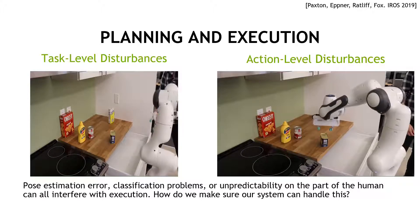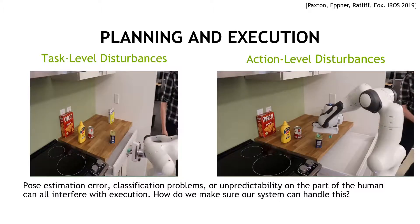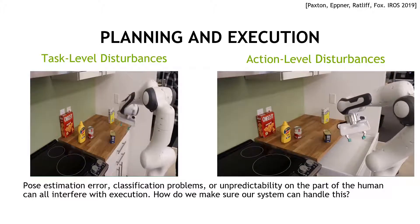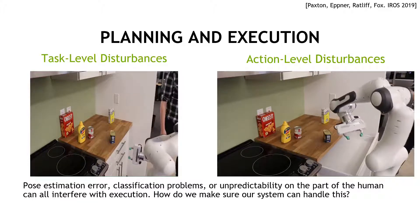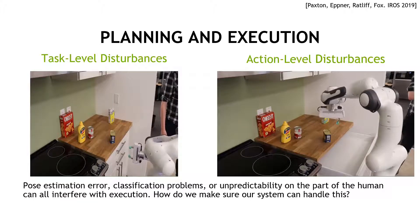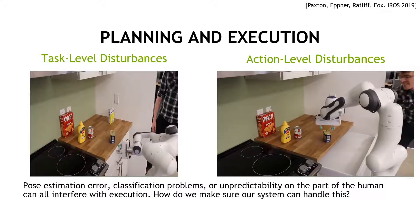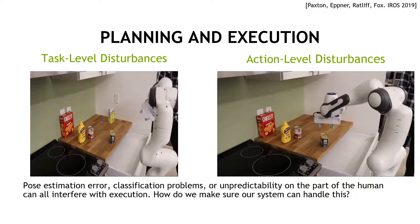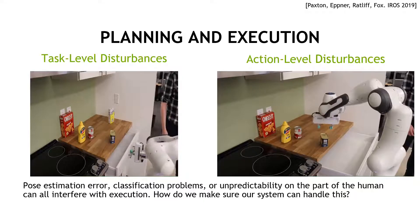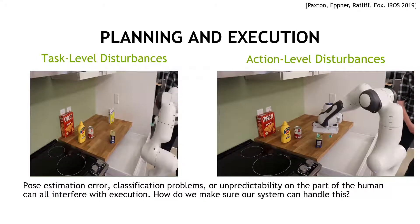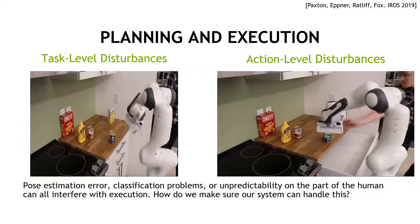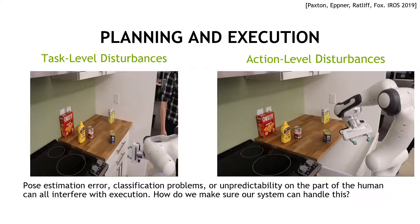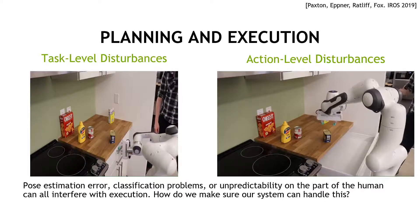Second, we have action-level disturbances. These are scenarios where, while the high-level action is fine, we still need to adjust the particular approach we use to get there. For example, this would be re-planning a motion in order to approach an object correctly because the human moved a few centimeters to the right or left. These issues can be caused by pose estimation, classification, or unpredictability on the part of the human.